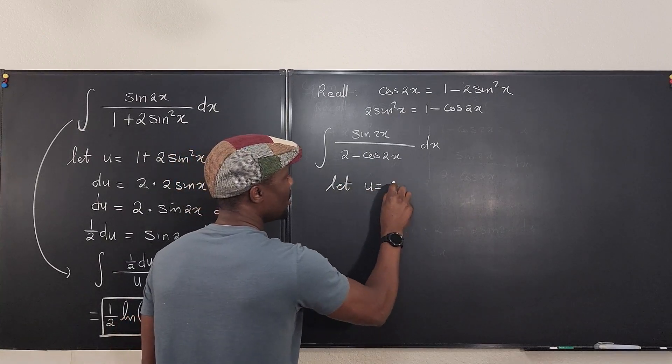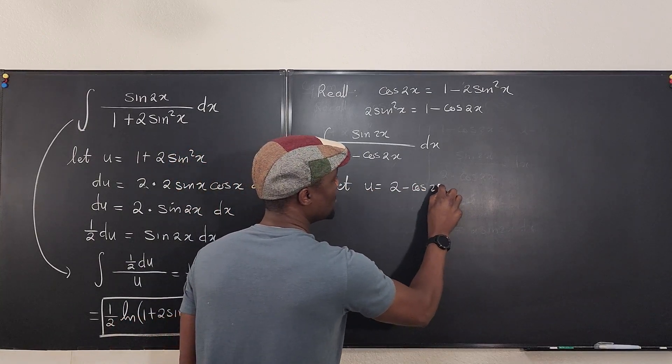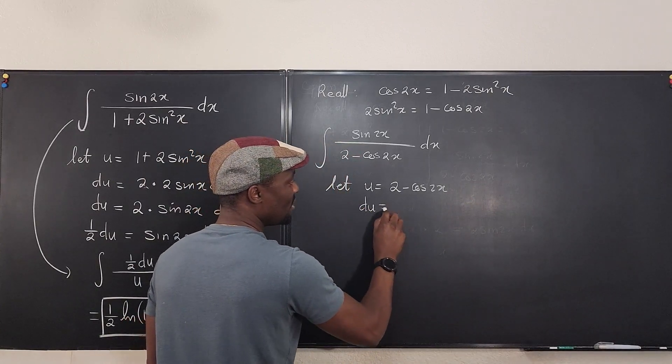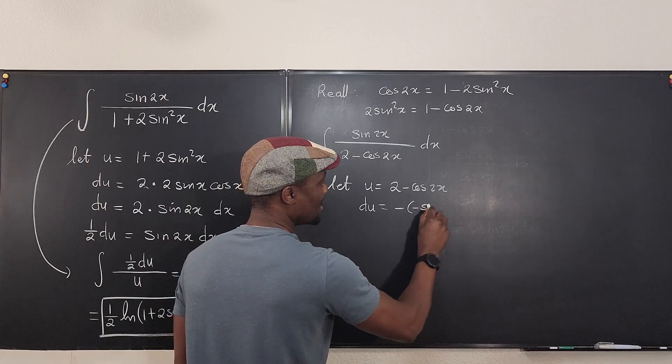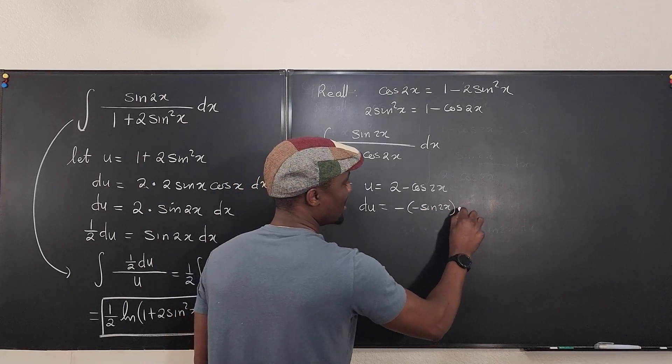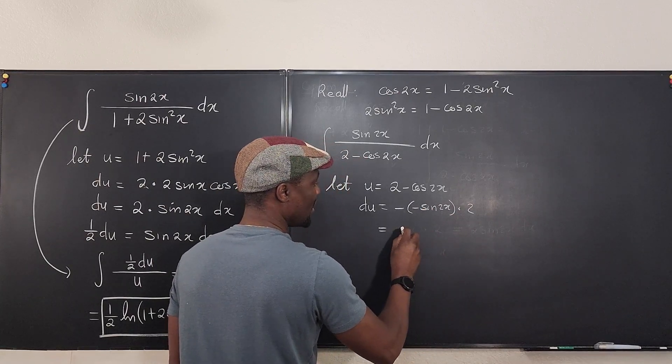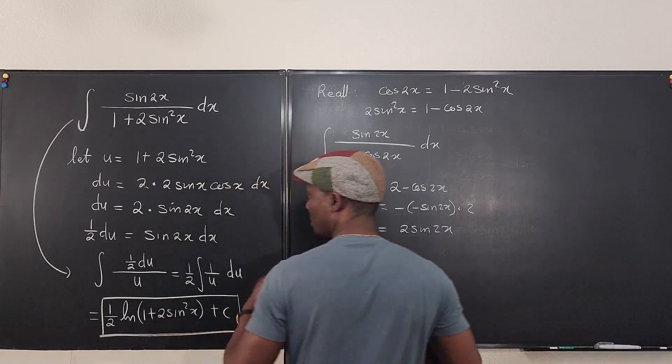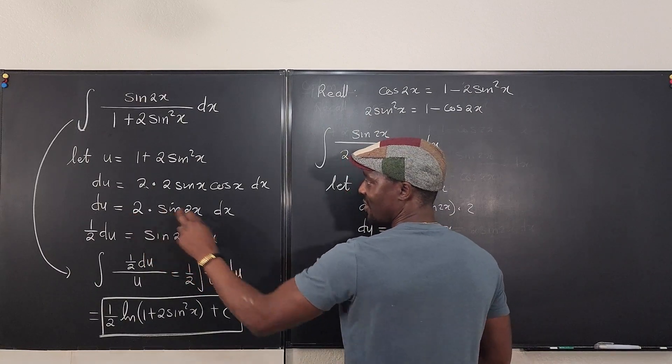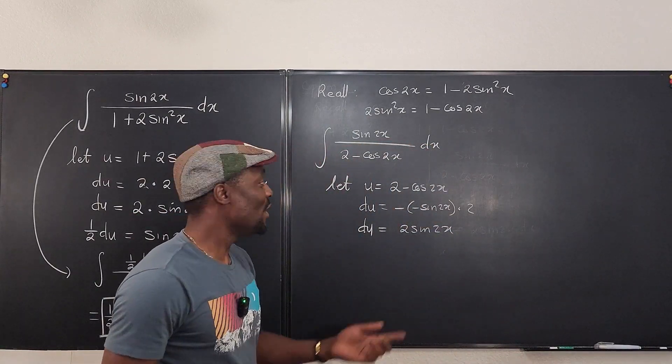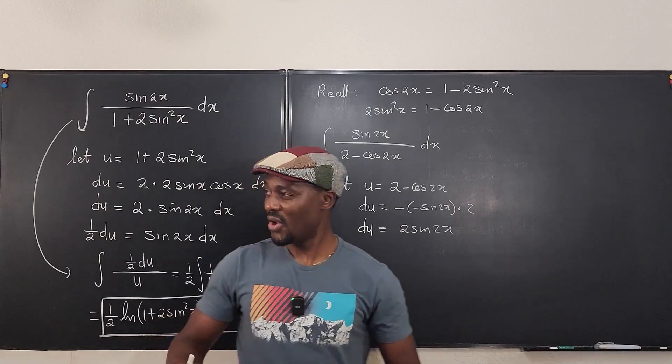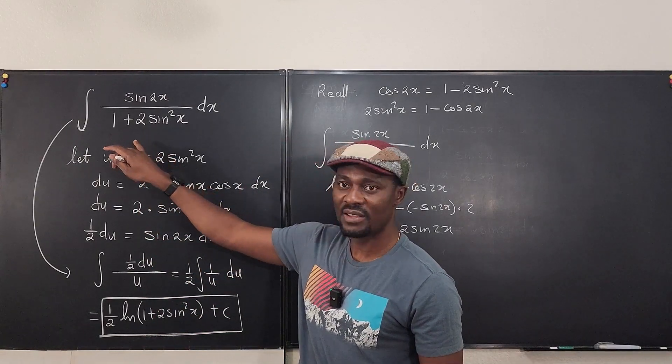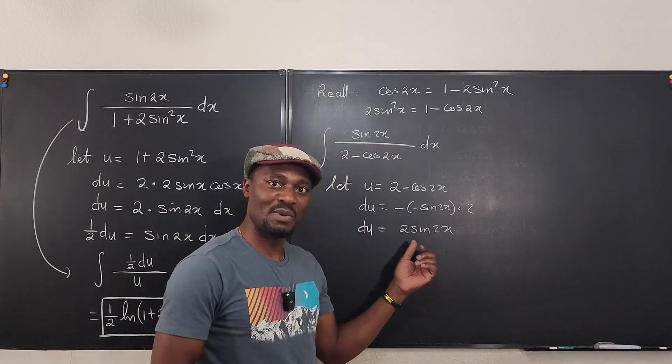And then I said, let u be 2 minus cosine 2x. And so my du became minus minus minus sine 2x times 2, which is 2 sine 2x was my du, which is the exact same thing we got here. You see that? It's the same thing. So this is what I was working with until I was setting up. I just said, I can actually differentiate this straight because this expression is this expression.